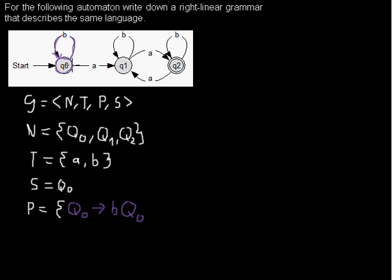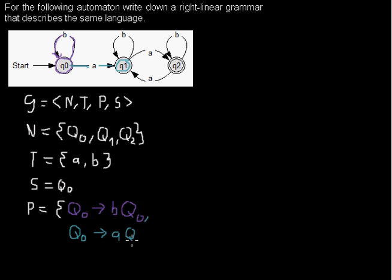Let's have a look at the next arc, where you are in q0, you read an input symbol a, and you move to q1. The grammar works the same as the automaton, giving us the rule q0 → a q1.